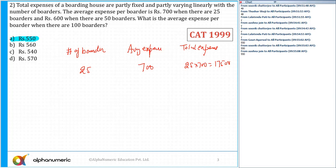Now after that it says 600 when there are 50 boarders. So this is 50, this is 600 when there are 50 boarders. So the total cost is 50 into 600 which is equal to 30,000.